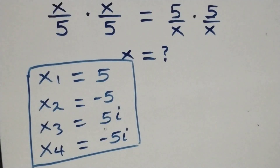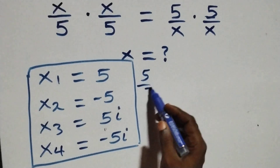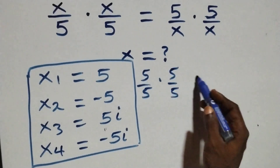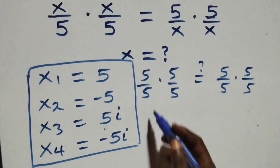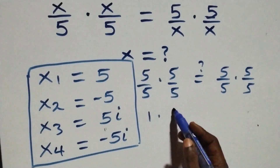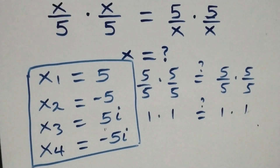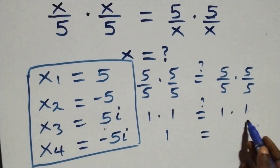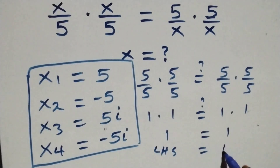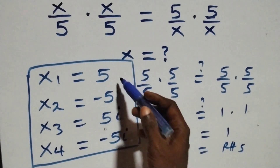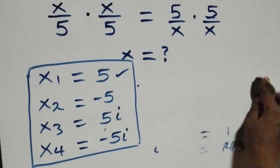We substitute x equals 5. The equation becomes 5 over 5 times 5 over 5, which is 1 times 1 equals 1. On the right-hand side it also gives 1 times 1, which is 1. Hence left-hand side equals right-hand side, and x equals 5 satisfies the given problem.